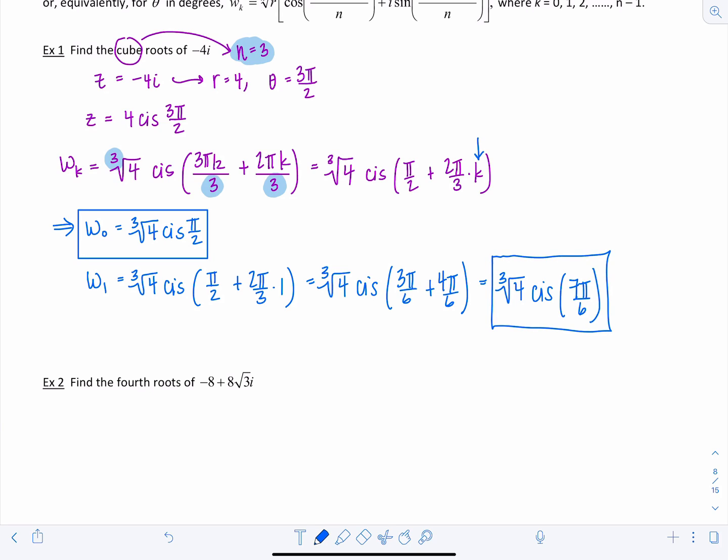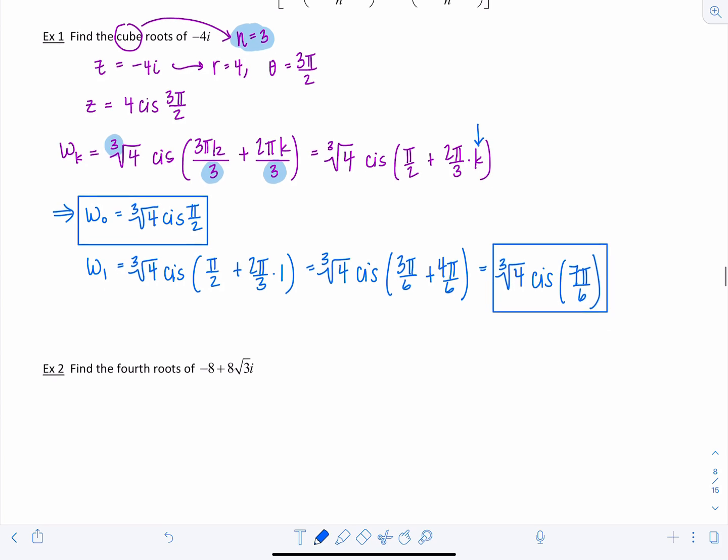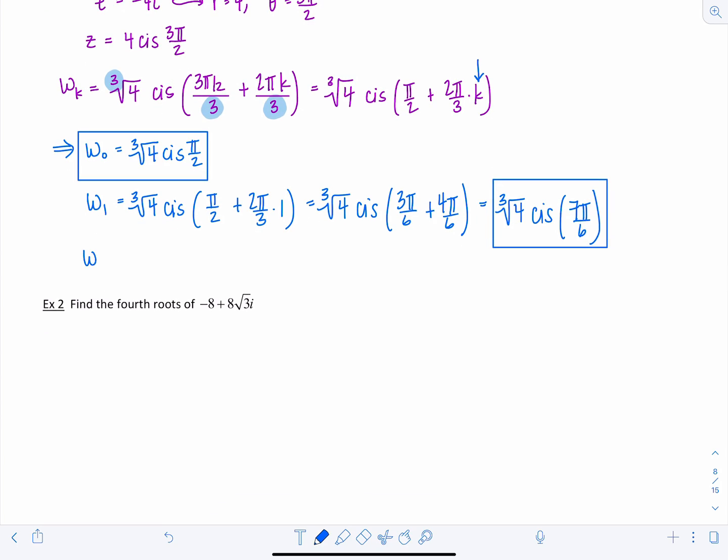Okay so I need one more, I've got two of them. Now I'm going to plug in 2 for k. So w sub 2 is going to be the cube root of 4, cis pi over 2 plus 2 pi over 3 times 2. So this is going to give me the cube root of 4, cis this is 3 pi over 6 plus 8 pi over 6, which gives me the cube root of 4, cis 11 pi over 6.